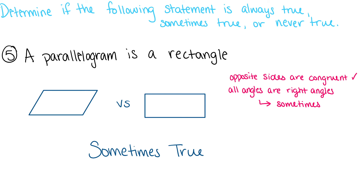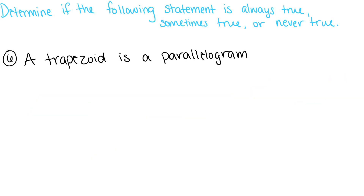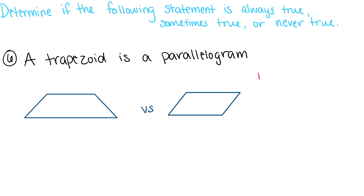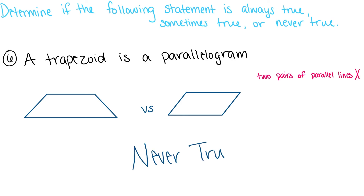A trapezoid is a parallelogram. Trapezoids have four sides just like parallelograms, but parallelograms have two pairs of parallel sides while trapezoids only have one. So this is never true.